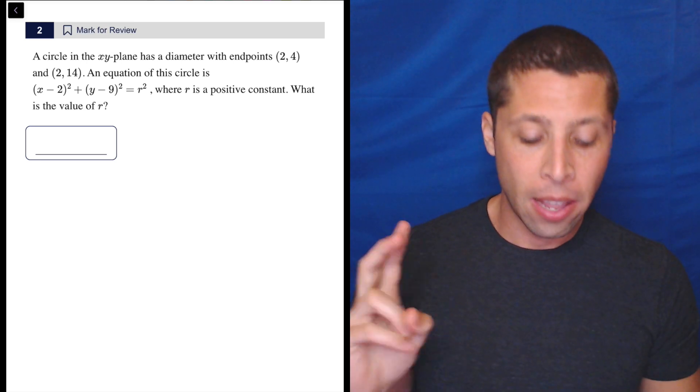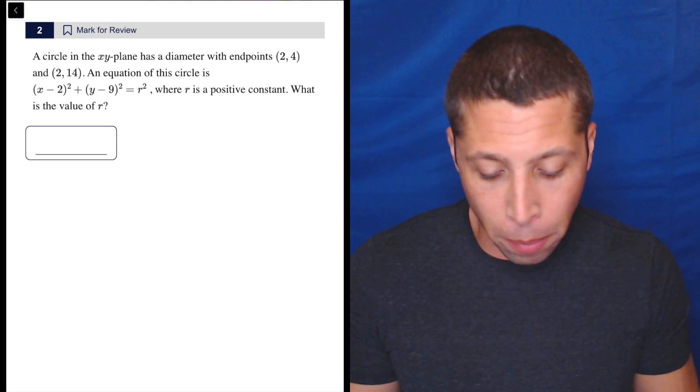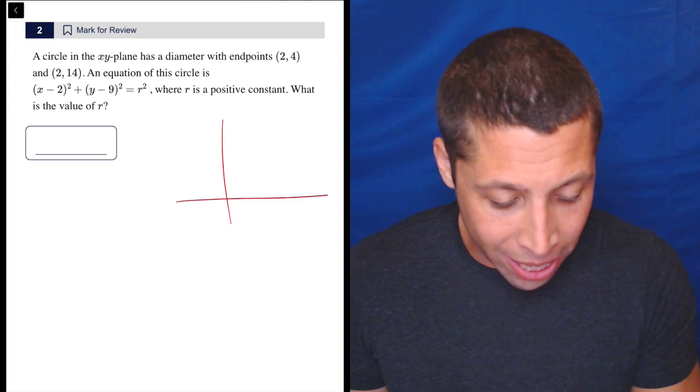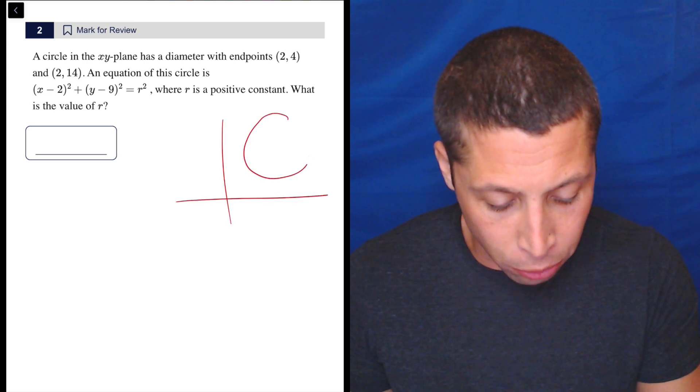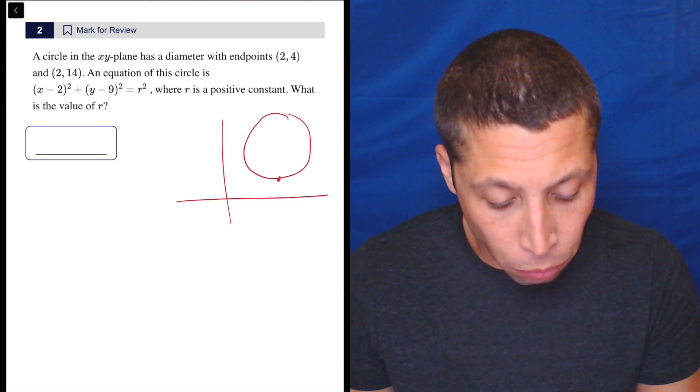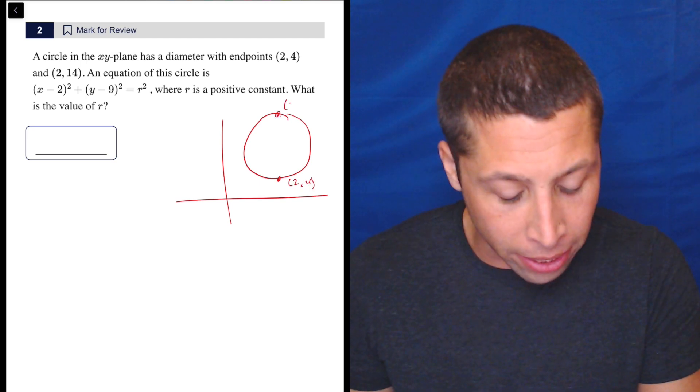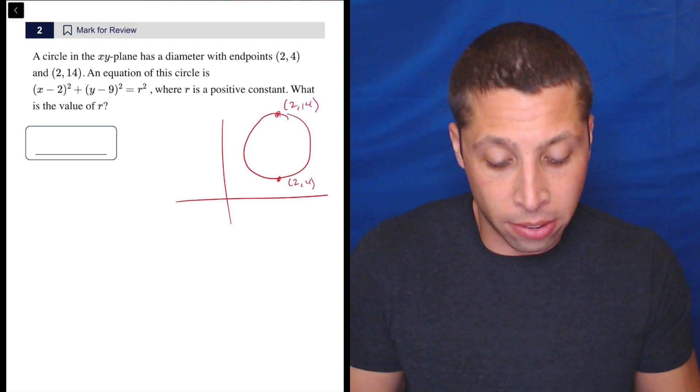There are actually two ways to get this that are much easier. One of them is just draw a picture, right? Let's draw our little XY plane here. We have a circle kind of in the first quadrant where 2, 4, so that's here, and 2, 14, right above it, are both parts of this diameter,